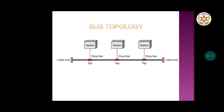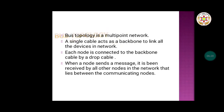Another type of topology is bus topology. In this arrangement there is a base cable — the foundation cable referred to as the backbone — and each station is connected to this base cable using a drop line via a tap. Bus topology is a multi-point network where a single cable acts as a backbone to link all the devices. Each node is connected to the backbone cable by a drop cable.